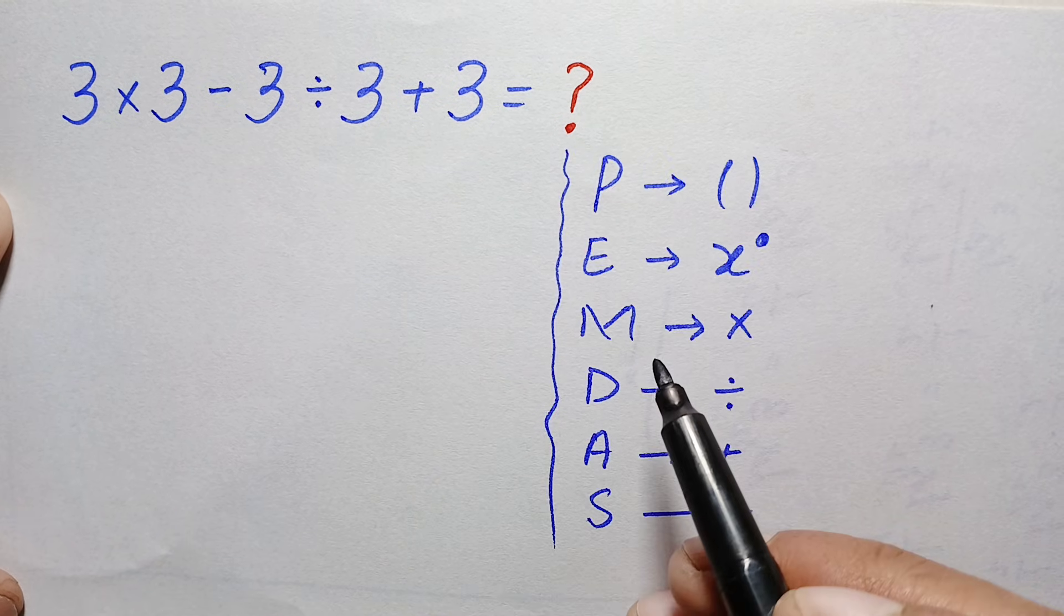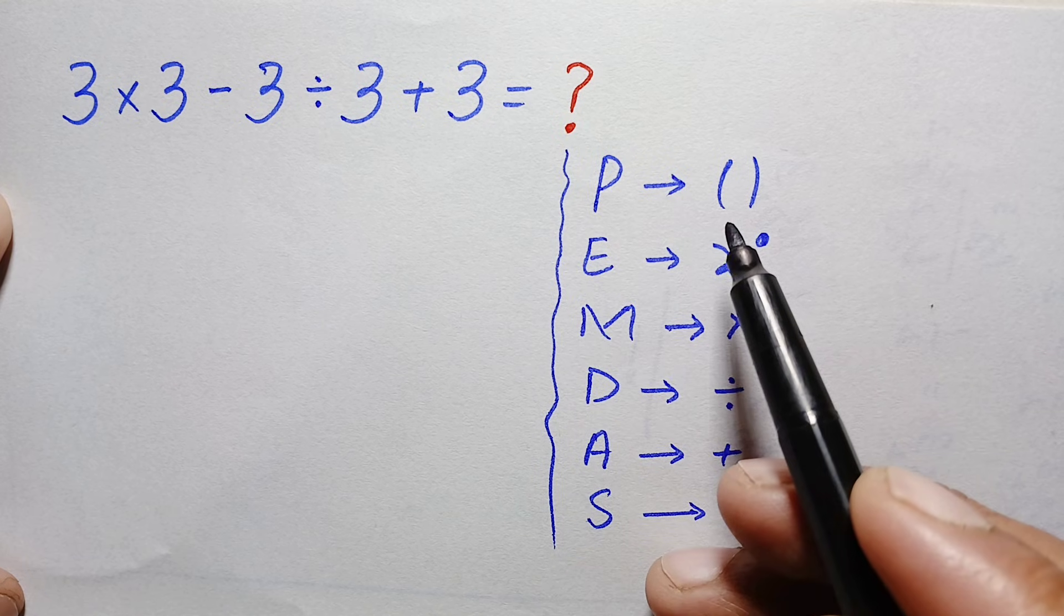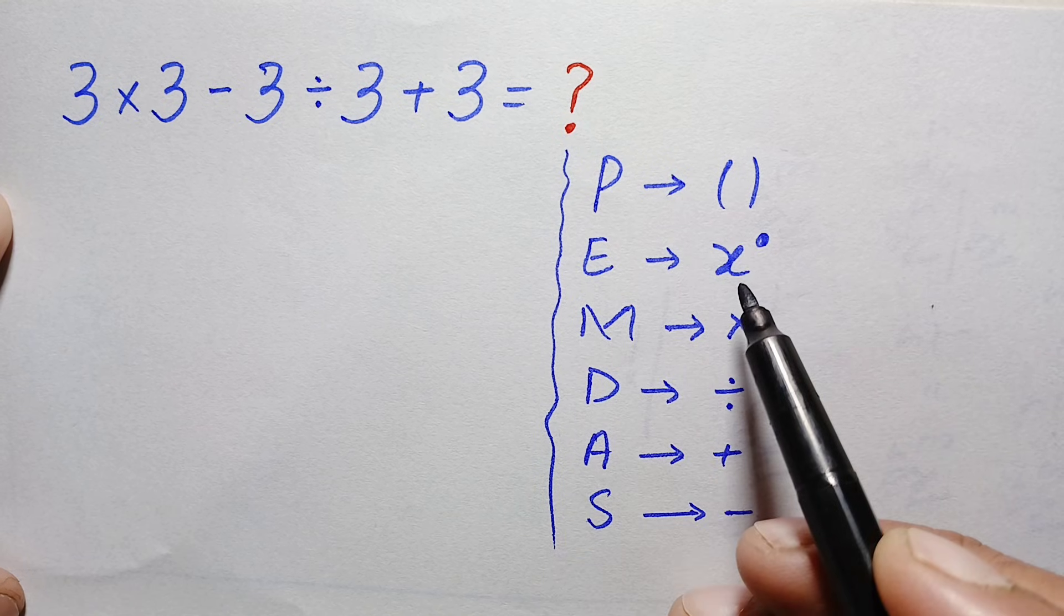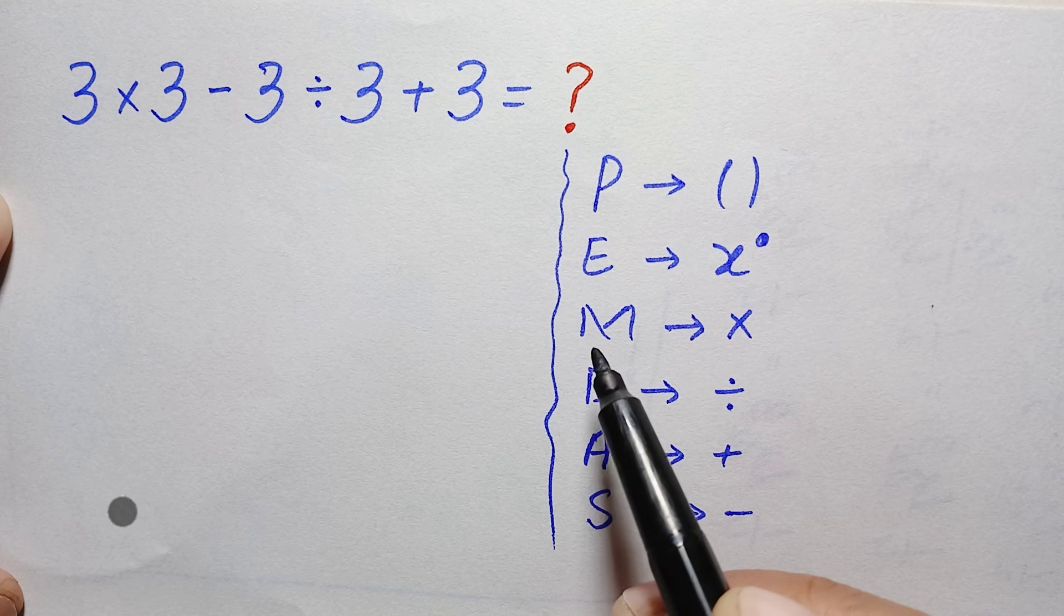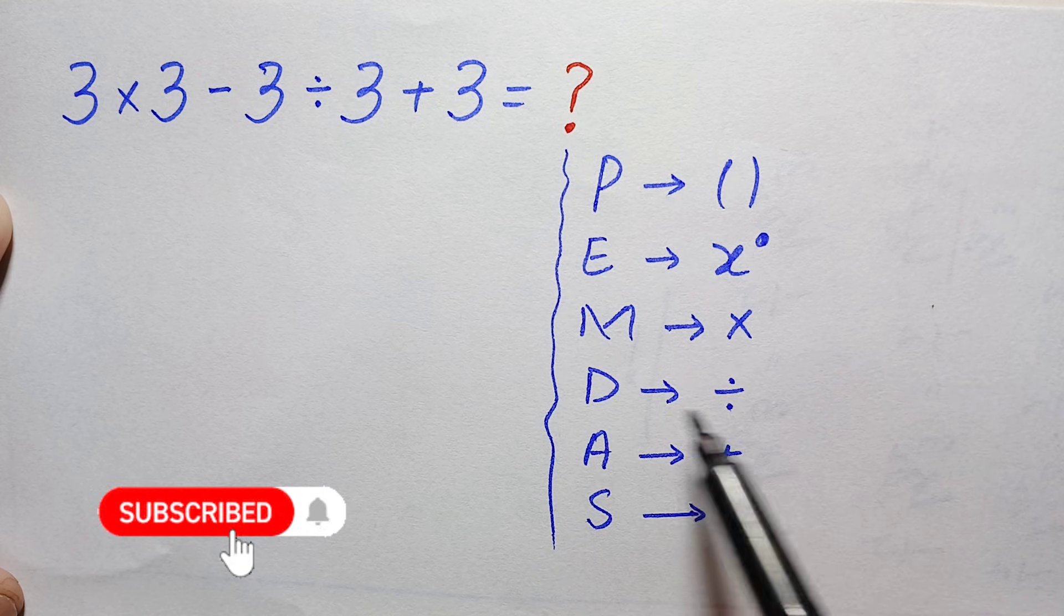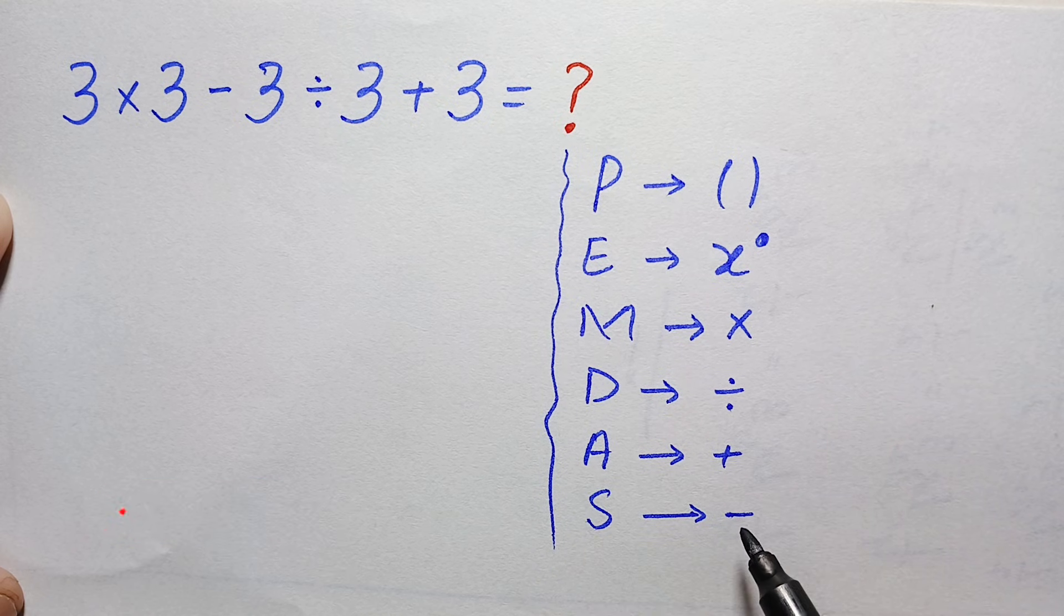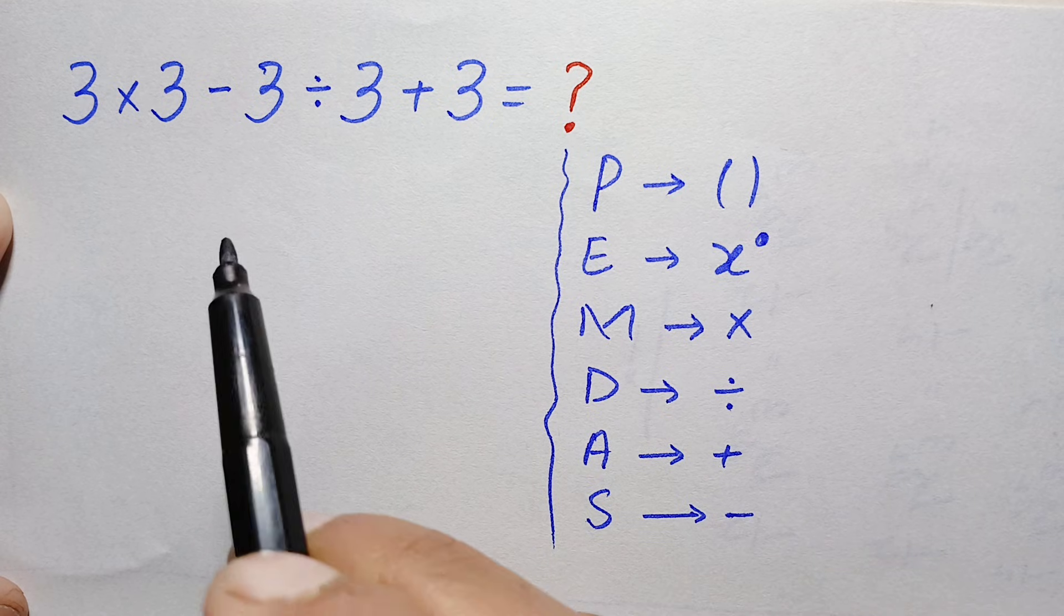In PEMDAS, P stands for parenthesis or brackets, E stands for powers or exponents, M stands for multiplication, D stands for division, A stands for addition, and S stands for subtraction.